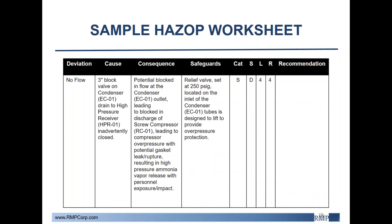Here is a sample HAZOP worksheet to give a better idea of what is involved in the overall HAZOP process. To develop a cause, first select the deviation being discussed — in this case, no flow — and then develop your cause. Once the cause is established, the team discusses the ultimate consequence without crediting any safeguards and ranks the severity. The team then addresses safeguards, discusses likelihood, and gives the scenario an overall ranking. If the ranking is outside acceptable industry scope, recommendations should be made to eliminate the risk.